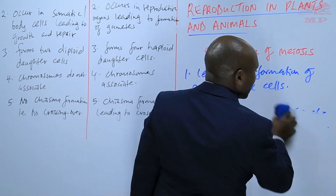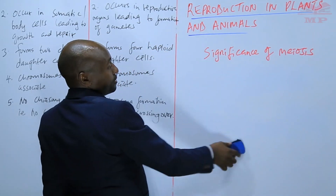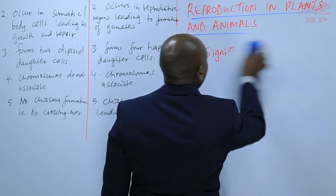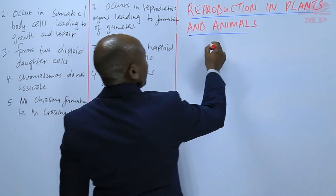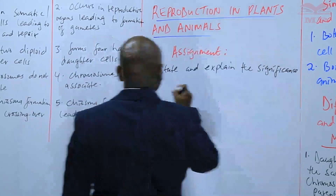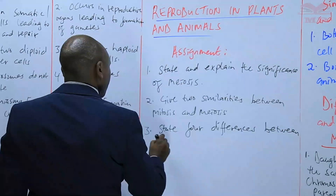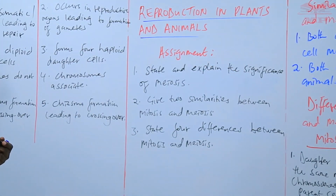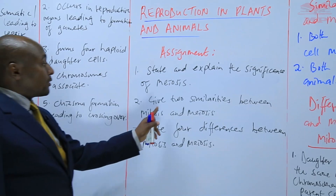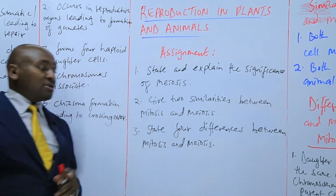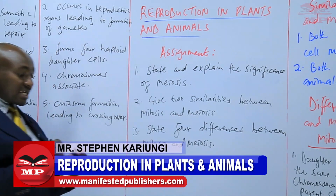We are going to have an assignment so that it can deepen the understanding of the section we have covered. The assignment is as follows: Number one, state and explain the significance of meiosis. Number two, give two similarities between mitosis and meiosis. And lastly, state four differences between mitosis and meiosis.